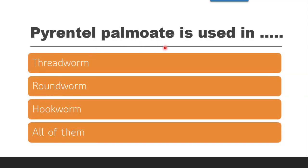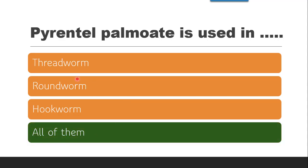Next question: Pyrantel pamoate is used in — whether it is threadworm, roundworm, hookworm, or all of them. Pyrantel pamoate is used in all of them — treatment of threadworm infection, roundworm infection, as well as hookworm infection.